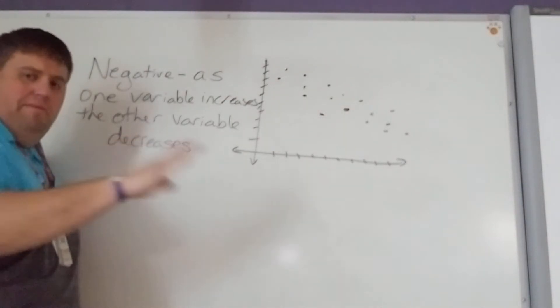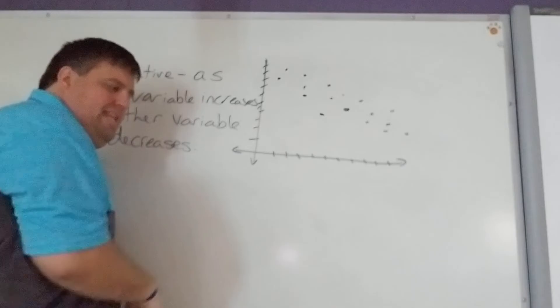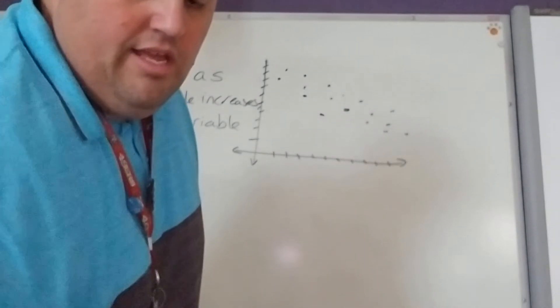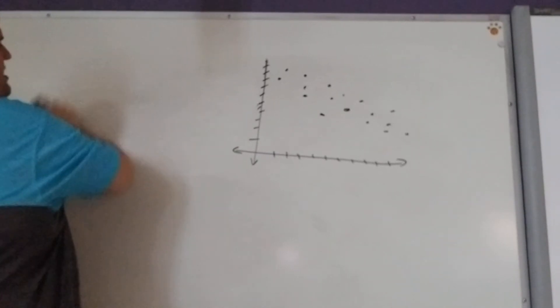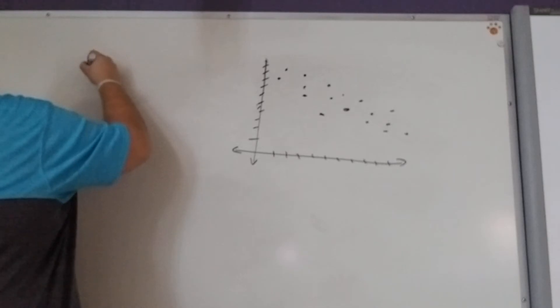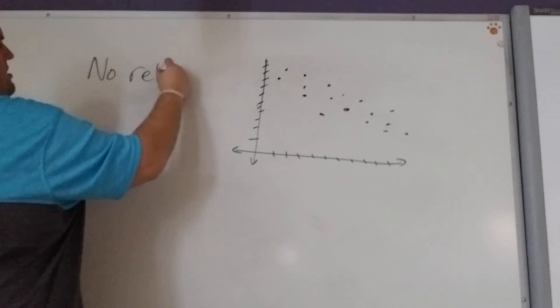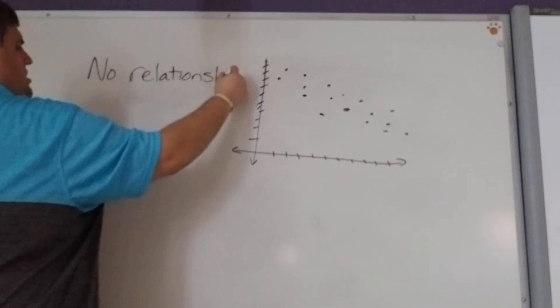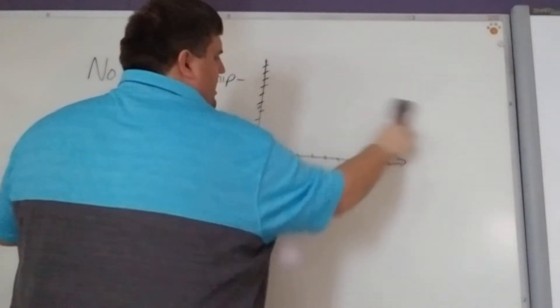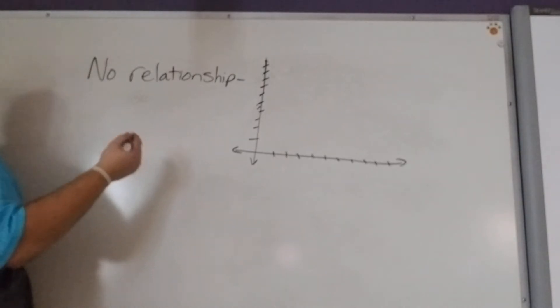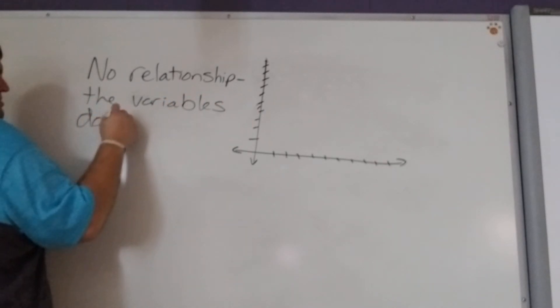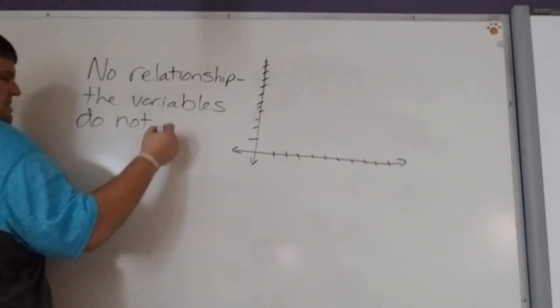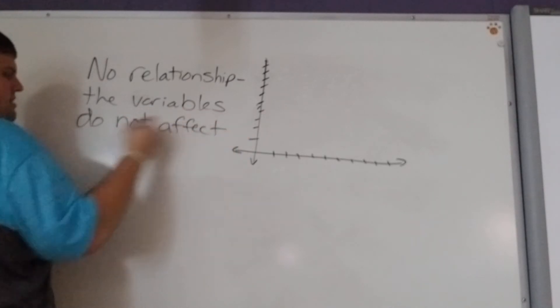So anything that, as one of them goes up, the other one goes down, that's going to be a negative relationship. All right? The last one that can happen when we're looking at a scatterplot is no relationship. And no relationship, we think that's stupid, but it basically is just saying that the variables do not affect each other.